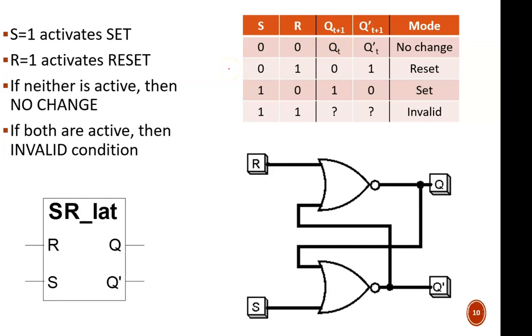The next row shows what happens when R is activated. This indicates reset mode, and so Q equals zero. Conversely, when S is activated, the latch is in set mode, and Q equals one.